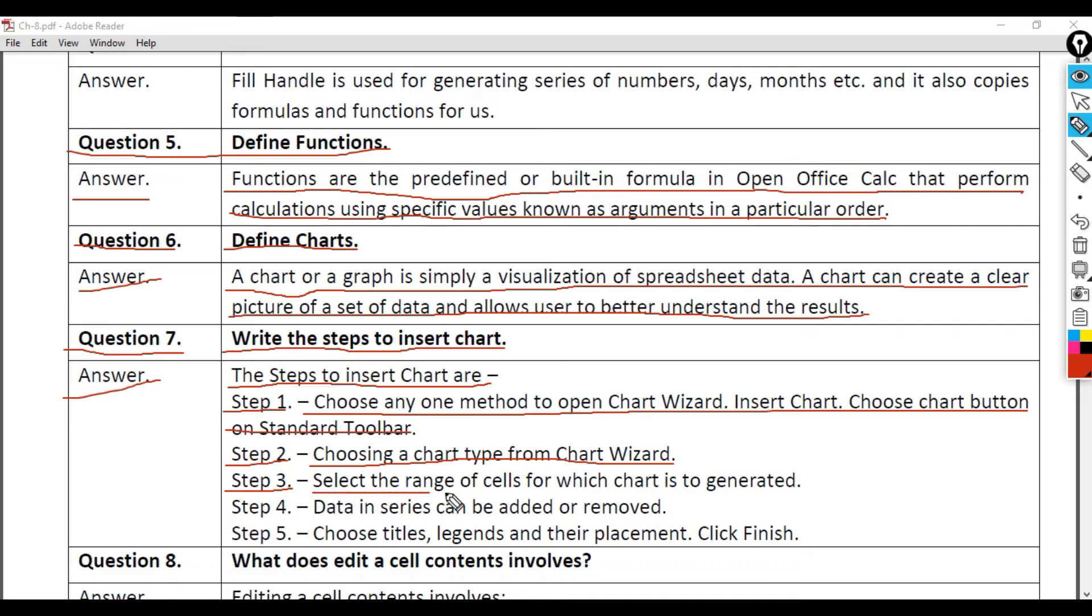Step 3 - Select the range of cells for which chart is to be generated. Step 4 - Data in series can be added or removed. Step 5 - Choose titles, legends, and their placement. Click Finish.